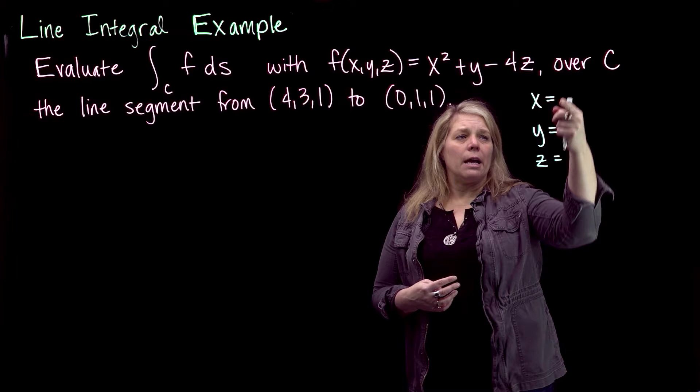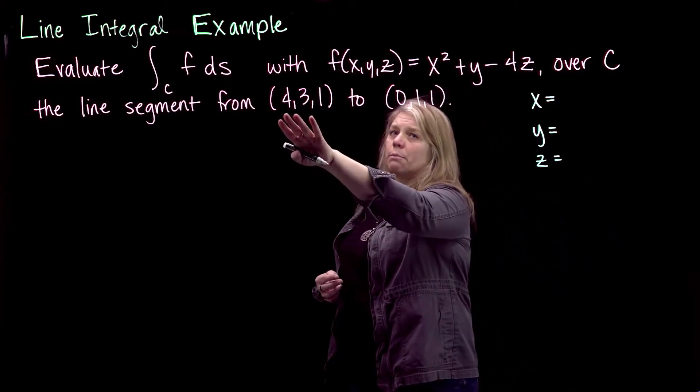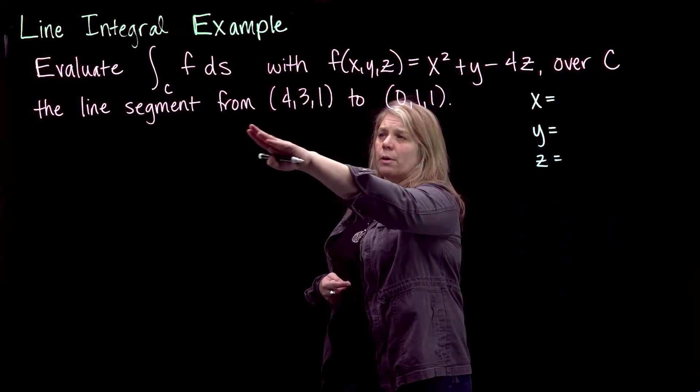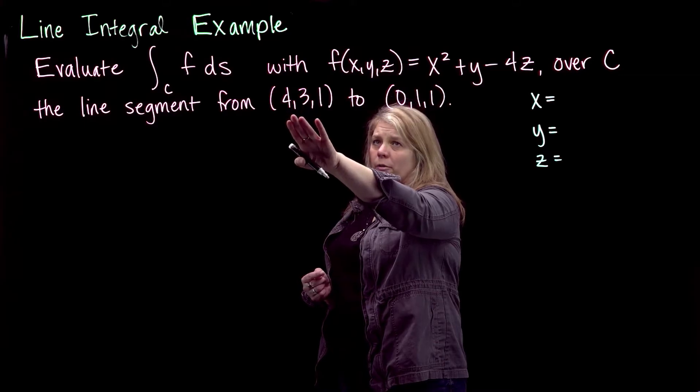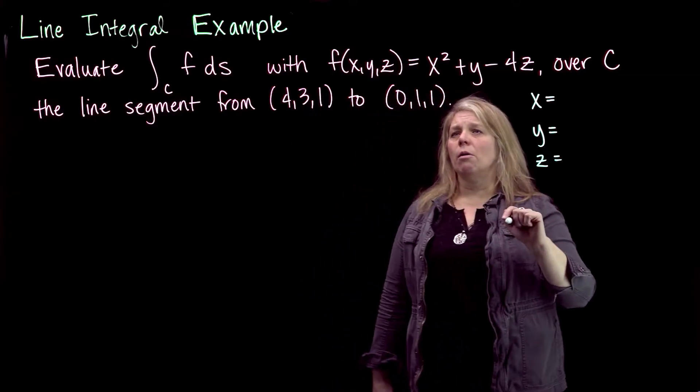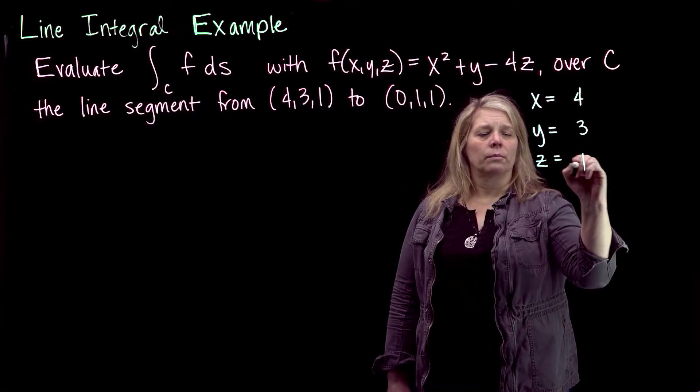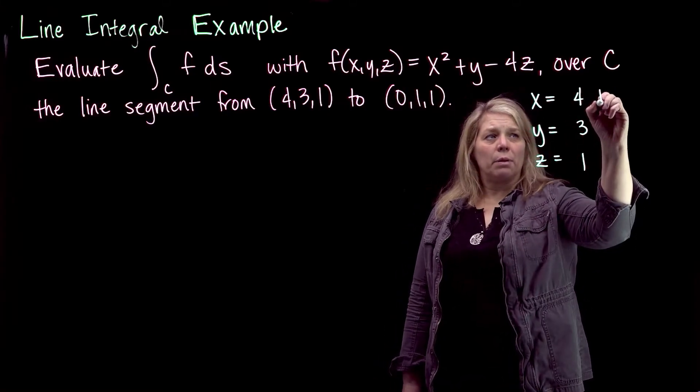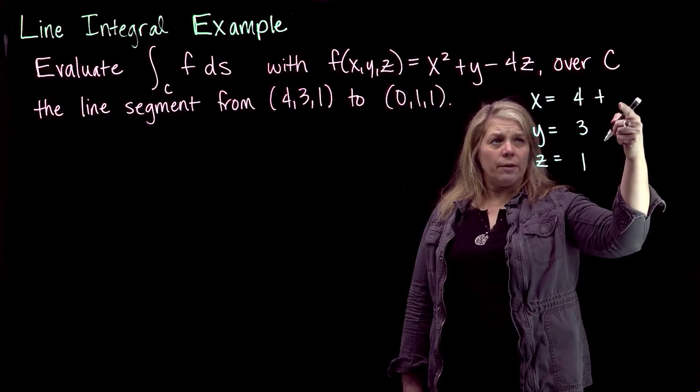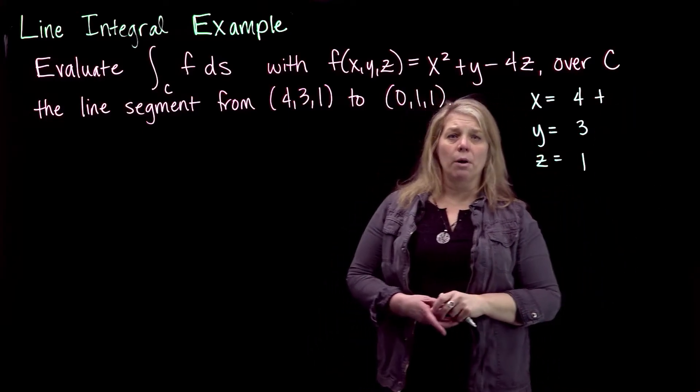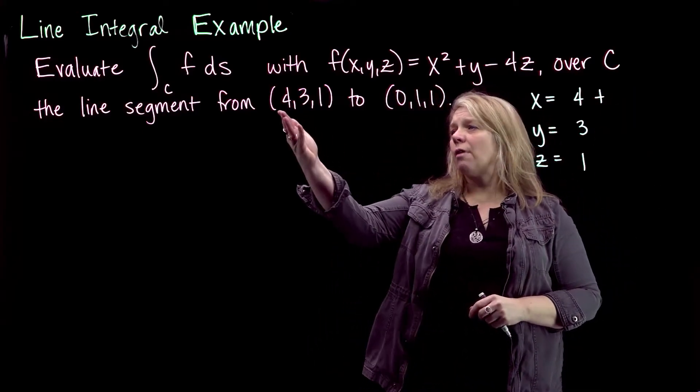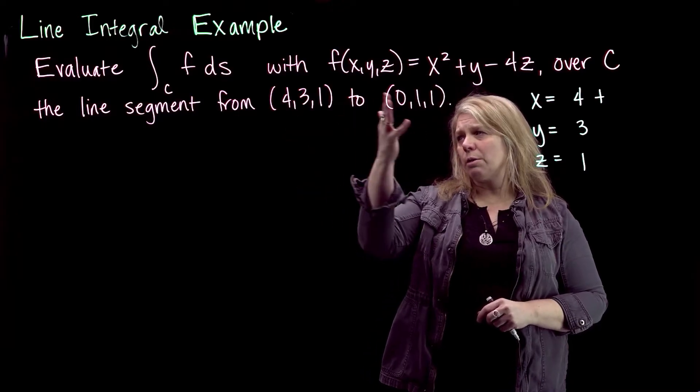And I need my initial point, so it's important which point I use for my initial point here, going from (4,3,1) to (0,1,1). So my initial point would be (4,3,1), and then I will have plus, and then the coefficient of the t term will be the components of a vector that go from our initial point to our terminal point.